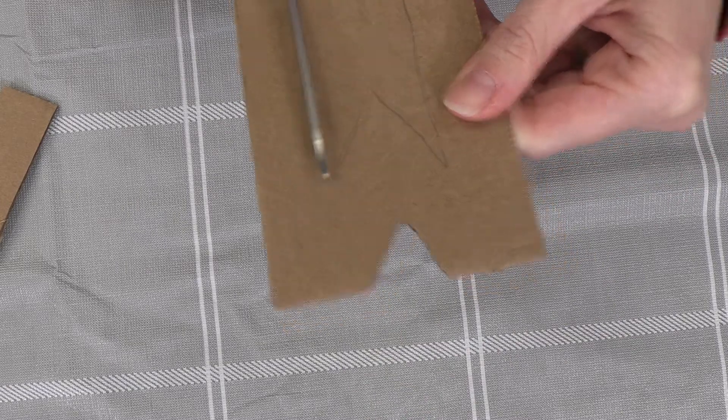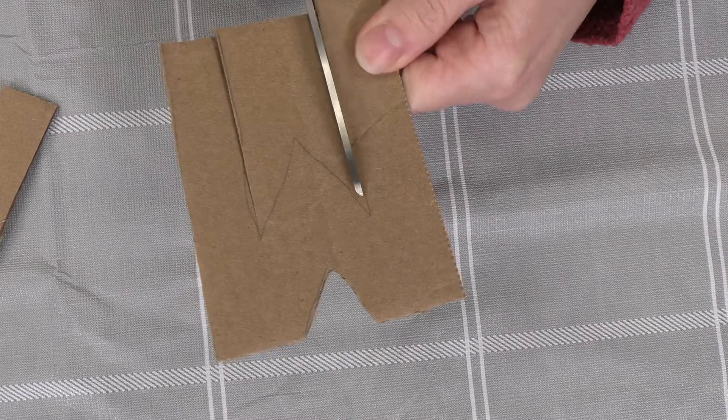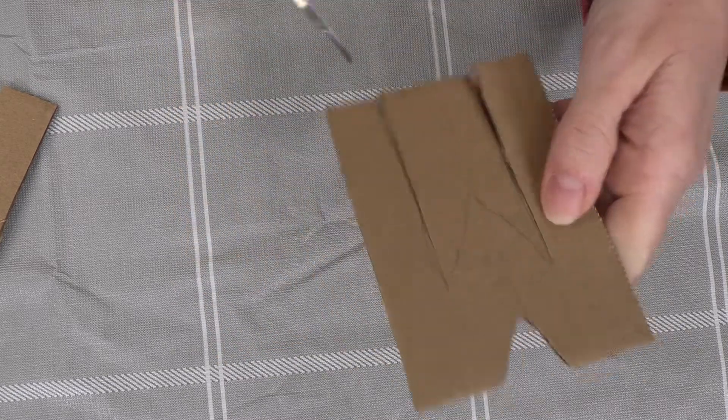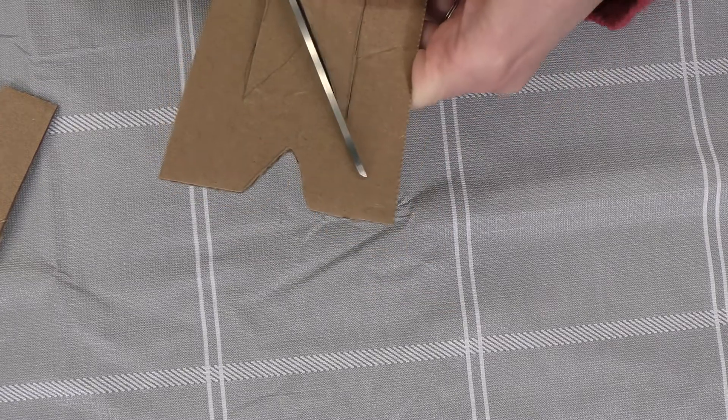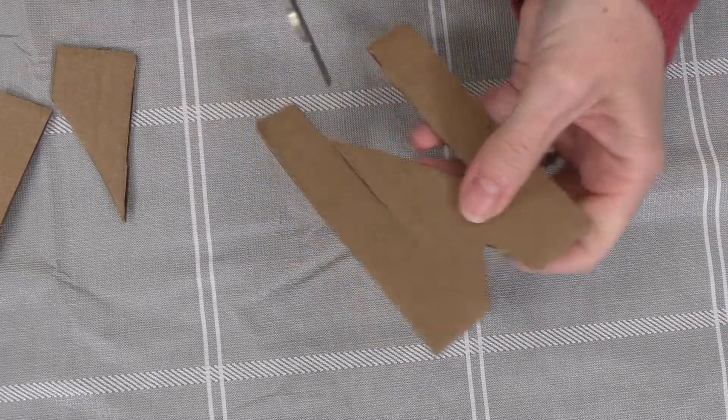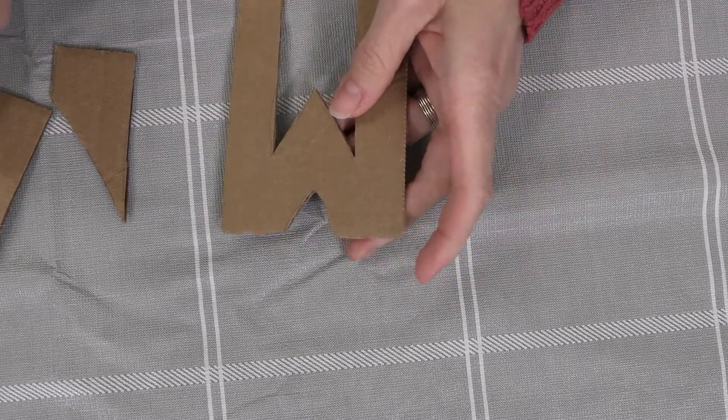I'll show you again with the scissors. Again, you can do whatever shape you want. If you wanted to do your mom's initial, if you wanted to do a heart, you can do, like I showed you, a wreath. You can really do anything that you would like.